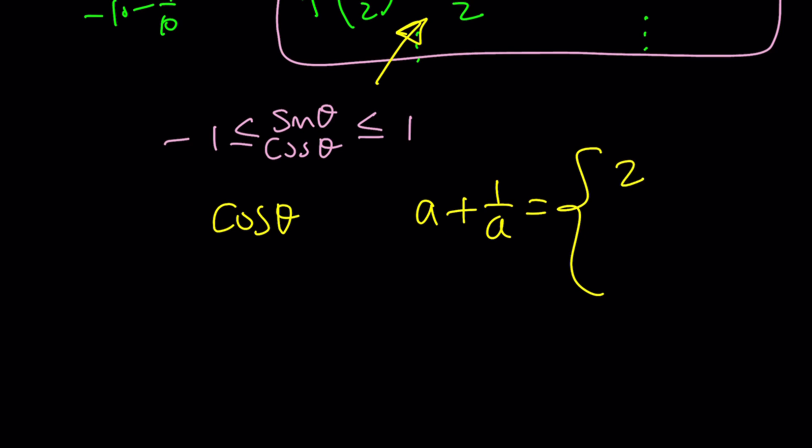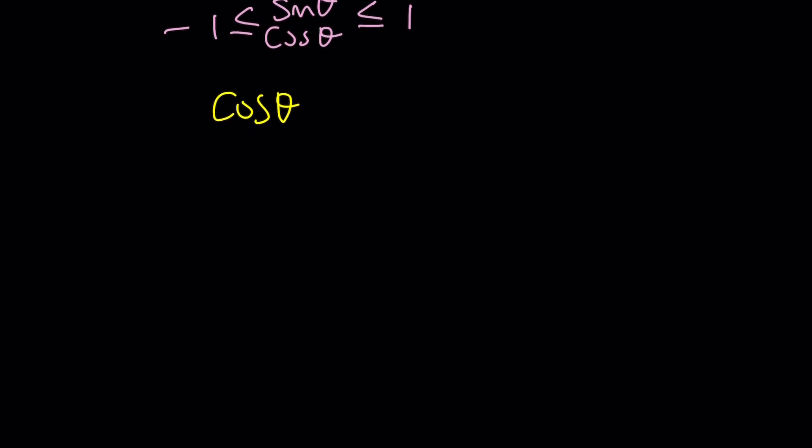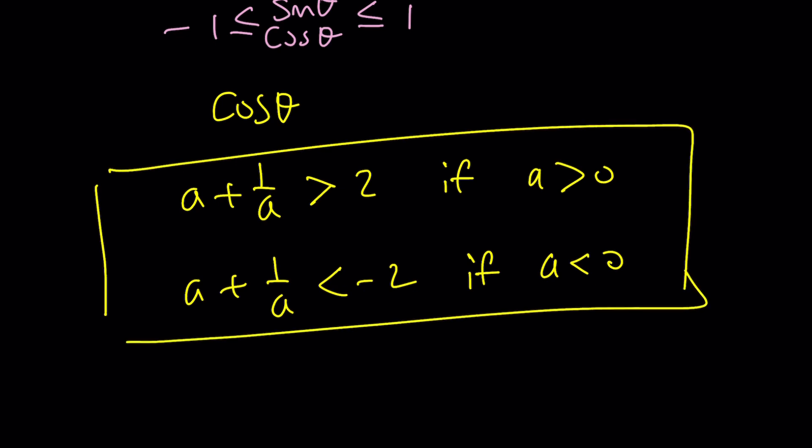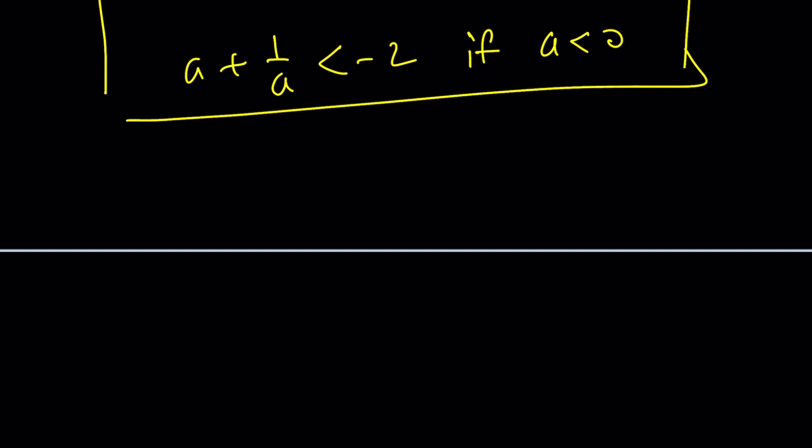When is it greater than 1 and when is it less than negative 1? If A is positive, we can write the values of this expression as a piecewise defined function. It's greater than 2 if A is positive. A plus 1 over A is less than negative 2 if A is negative. So now we know that if we're outside that interval, we're going to go ahead and solve it.